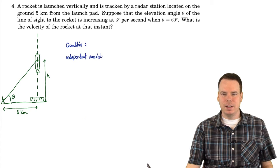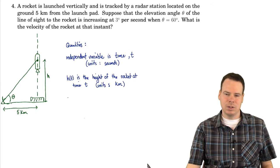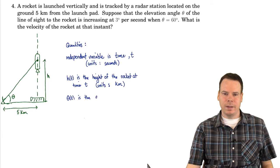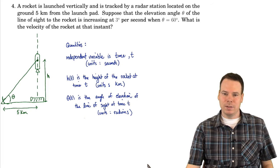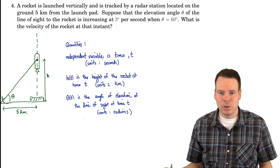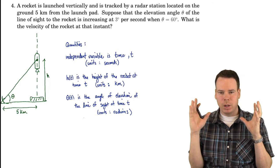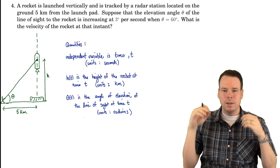The independent variable is time, denoted by T, with units of seconds. We have H(T) as the height of the rocket at time T, with units of kilometers, since that's the unit used in the question for the distance from the station to the launch pad. We let theta(T) be the angle of inclination at time T. We need to be careful here: the question lists degrees, but we never use degrees in a calculus problem — always radian measure for angles in calculus. So we specify theta in radians and will do some conversions.